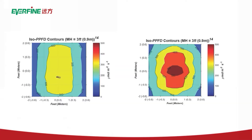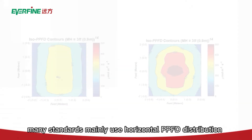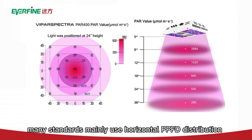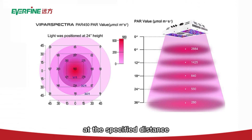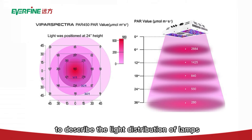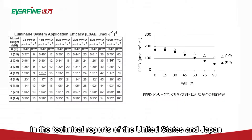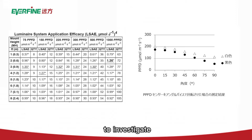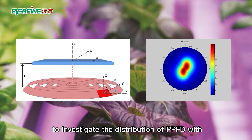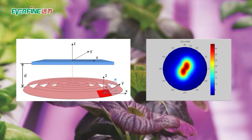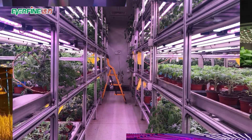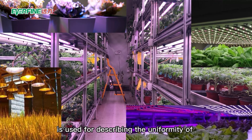Currently, many standards primarily use horizontal PPFD distribution at a specified distance to describe the light distribution of lamps. Technical reports from the United States and Japan also propose investigating the distribution of PPFD at different angles at specified locations under the lamp.